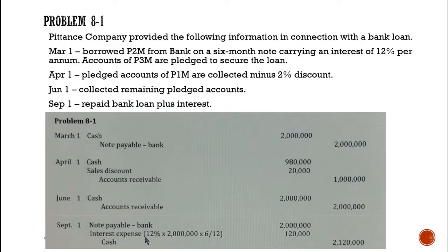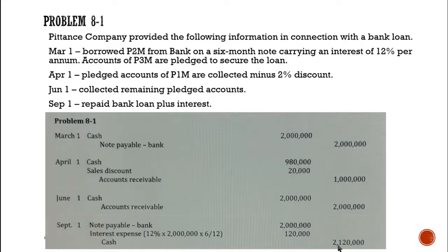On September 1, we repay the bank loan. The interest is computed as 12 percent times 2 million times 6 over 12 months — covering March, April, May, June, July, August, to September 1 — that is 6 months. So the interest is 120,000. The total payment to the bank is 2,120,000.